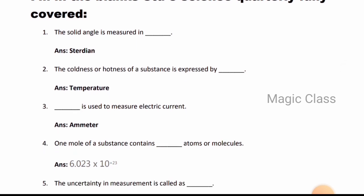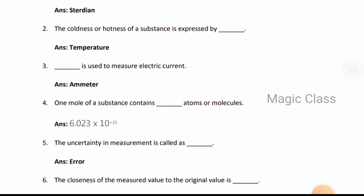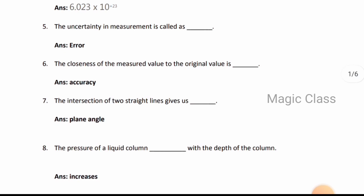Question 1: The solid angle is measured in - steradian. Question 2: The coldness or hotness of a substance is expressed by - temperature. Question 3: Ammeter is used to measure electric current. Question 4: One mole of a substance contains - atoms or molecules.